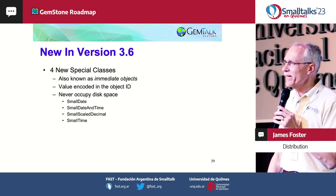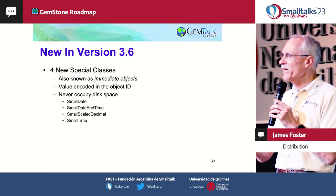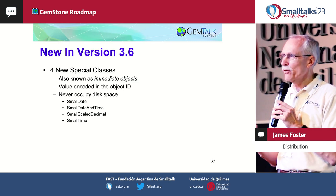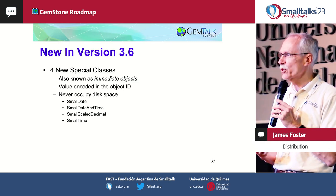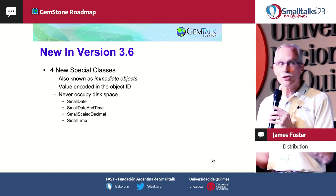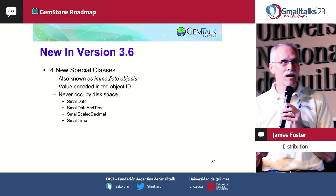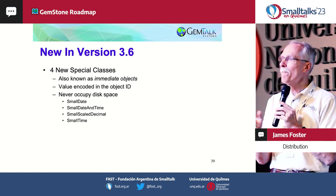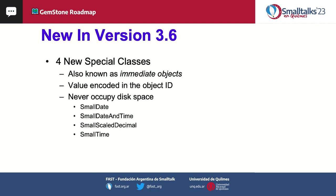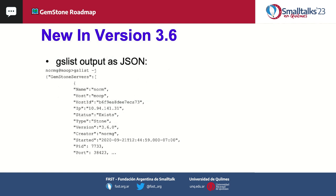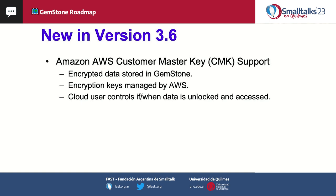Immediate objects are a classic way in Smalltalk to improve performance and limit object size. Most of us are familiar with the fact that SmallIntegers are immediates. We now have not just SmallIntegers but also Float and DateTime, ScaledDecimal, and other things, so we can put more objects into a more limited space — 64-bit gives us many more bits to address that. The GsList can be serialized as JSON, and there's Amazon customer key support where you can store a key in Amazon with the data in GemStone, giving more security advantage.